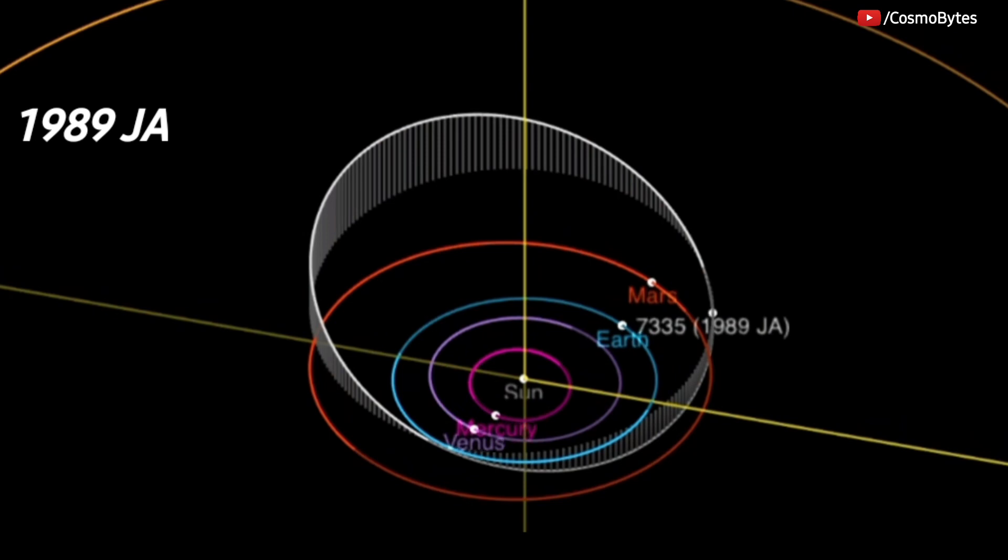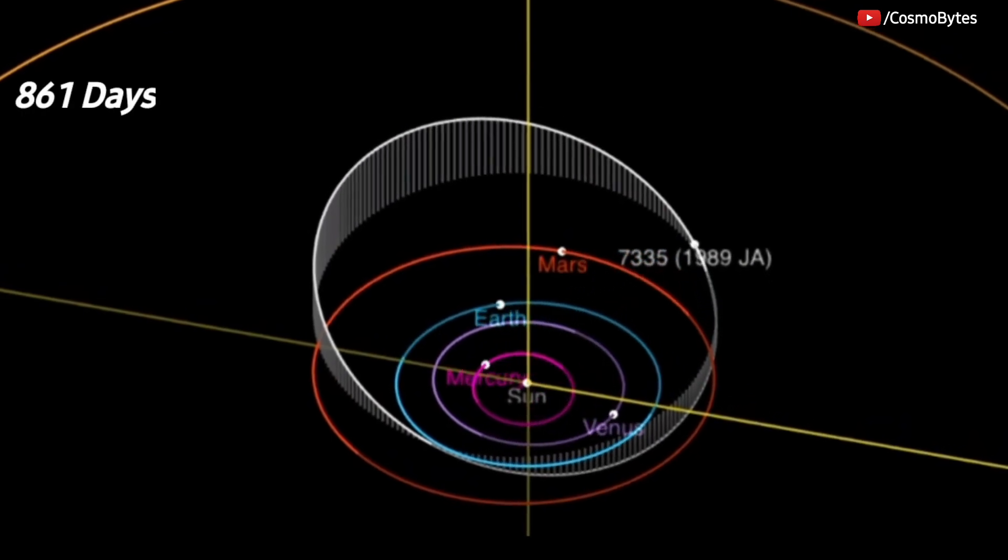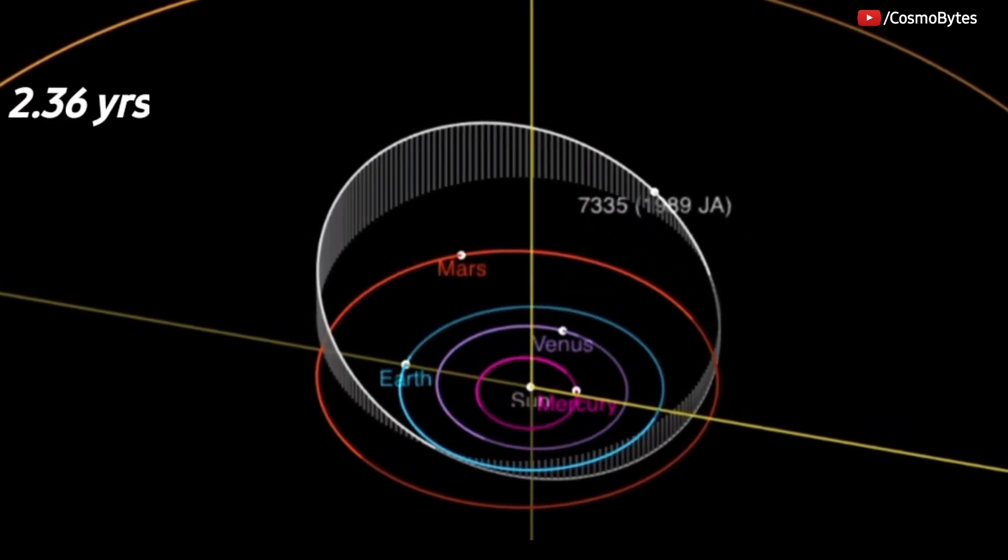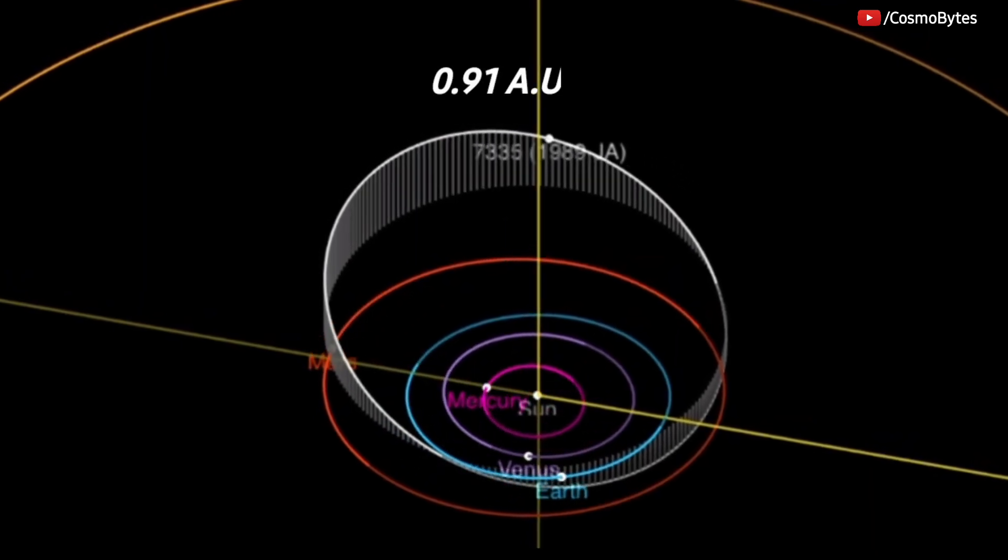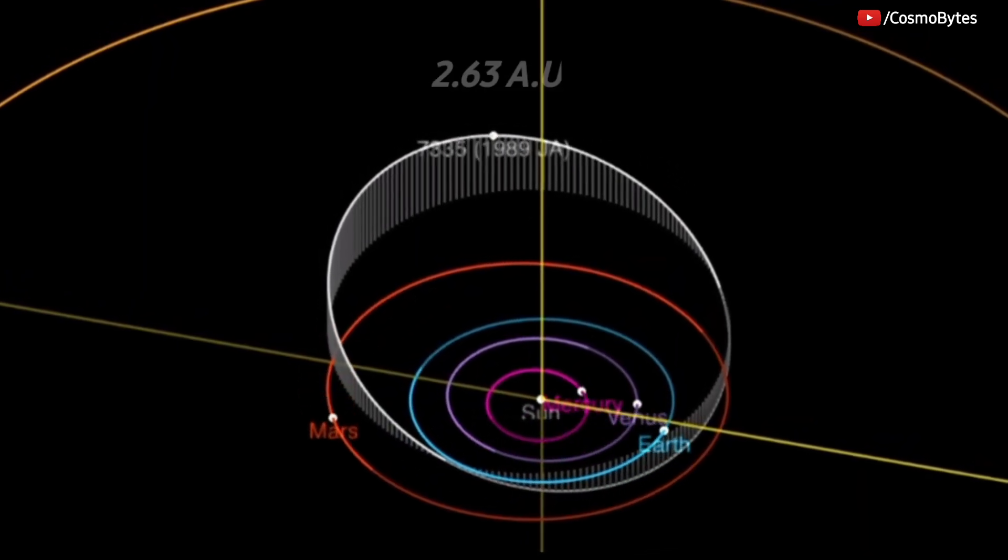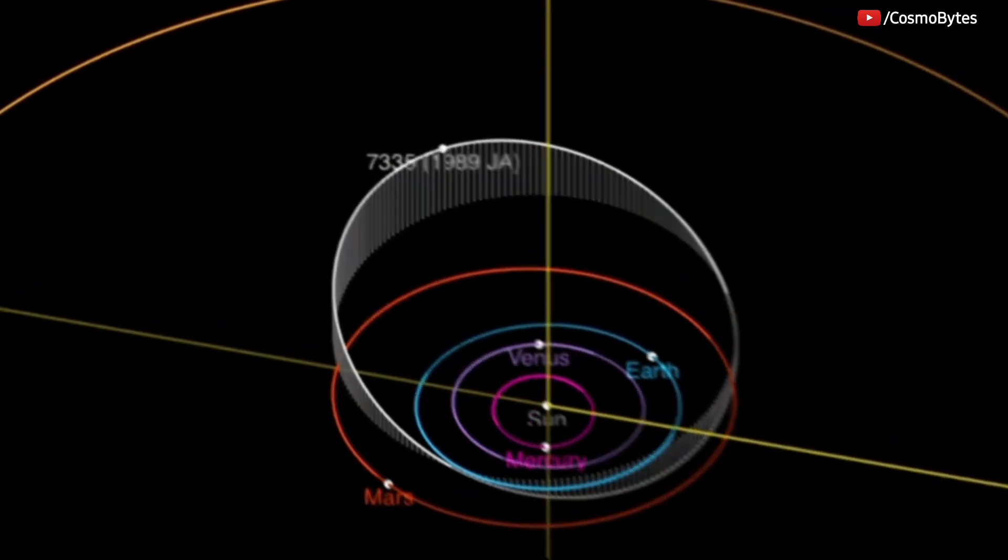Asteroid 1989 JA orbits the Sun every 861 days, 2.36 years, coming as close as 0.91 AU and reaching as far as 2.63 AU from the Sun.